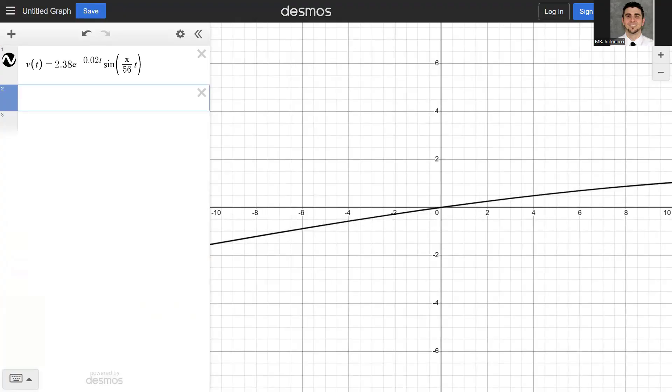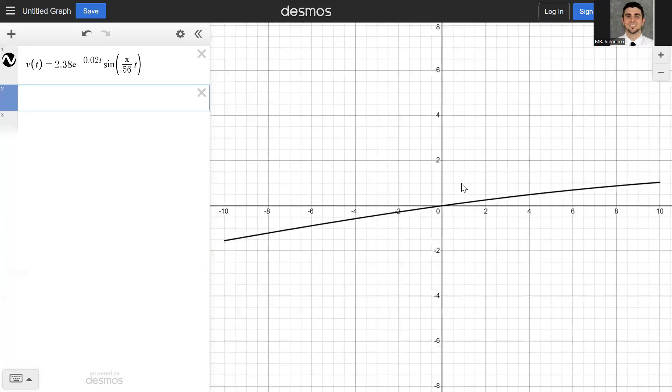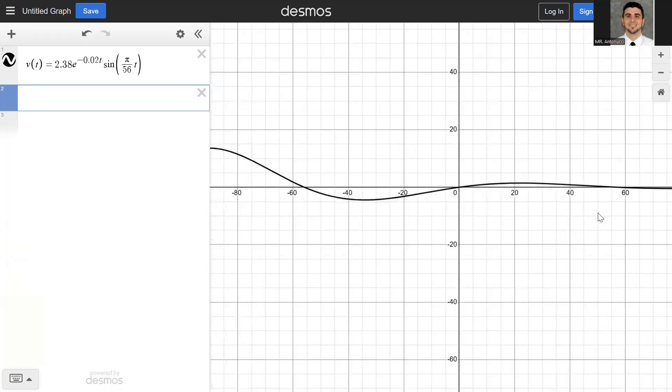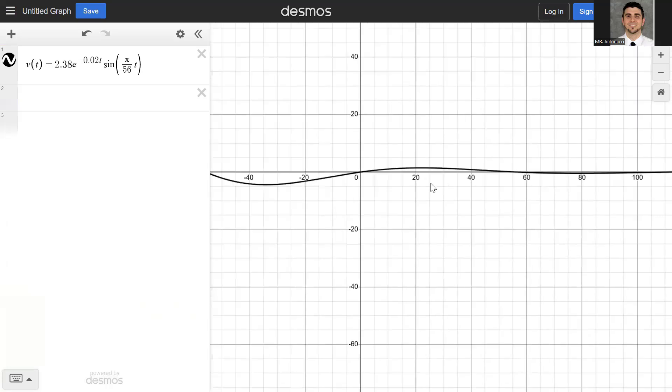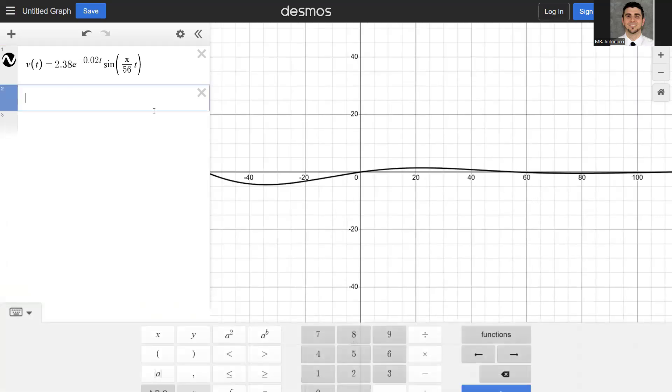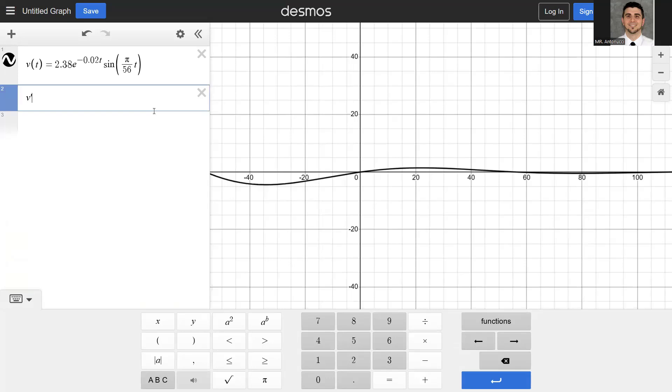So we're in Desmos now, and I've graphed the velocity function, put it in the home viewing window, and we can scroll out and stuff because it asks us to find the acceleration at 60. Easiest way to do that is actually type in the notation v'(60), and it gives you the answer right here. No work needed. All you got to do is make sure your answer is accurate to three decimal places, and then we can move on to the next question.